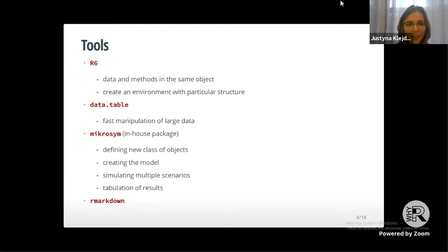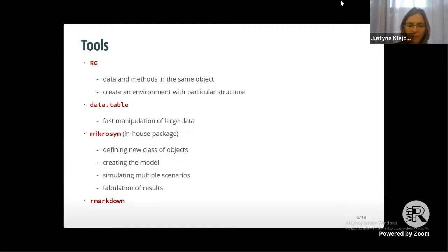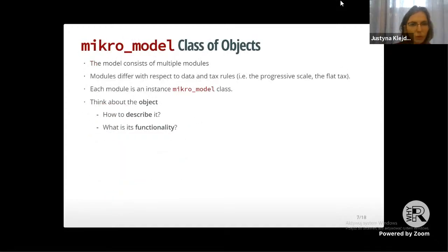The R packages that form the backbone of our model are: R6, which enables us to create our own class of objects as an environment with a particular structure; data.table for faster data wrangling of big data sets; and our in-house package microSim, which contains many helper functions to conduct microsimulations — creating model objects, simulating scenarios, and tabulating results. We also use R Markdown to create reports.